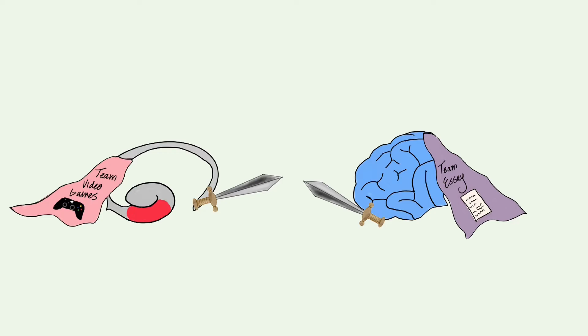Procrastination comes in all shapes and sizes, from putting off taking the trash out until it overflows, to cramming for an exam the night before. So, why do we do this, even when we know it's not good for us, and what's happening in the brain?